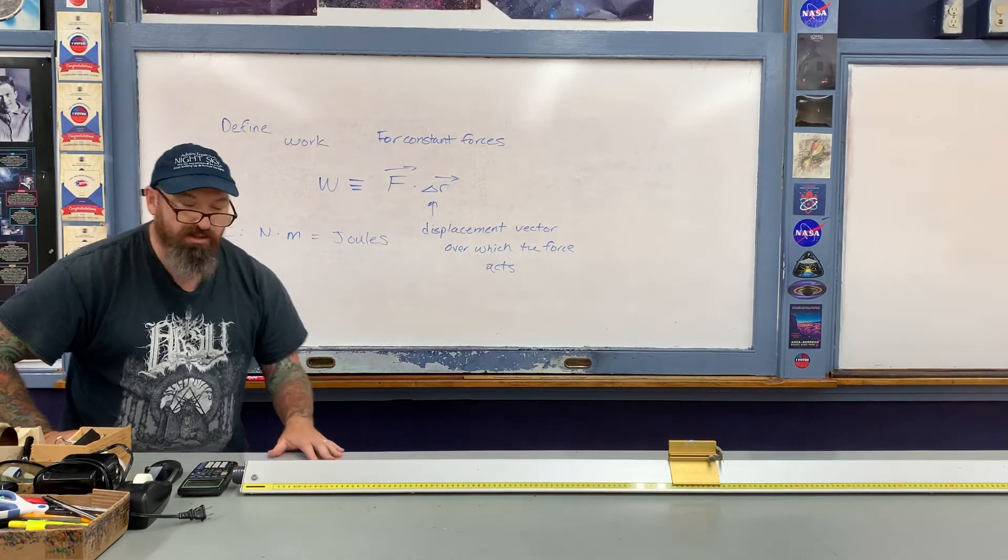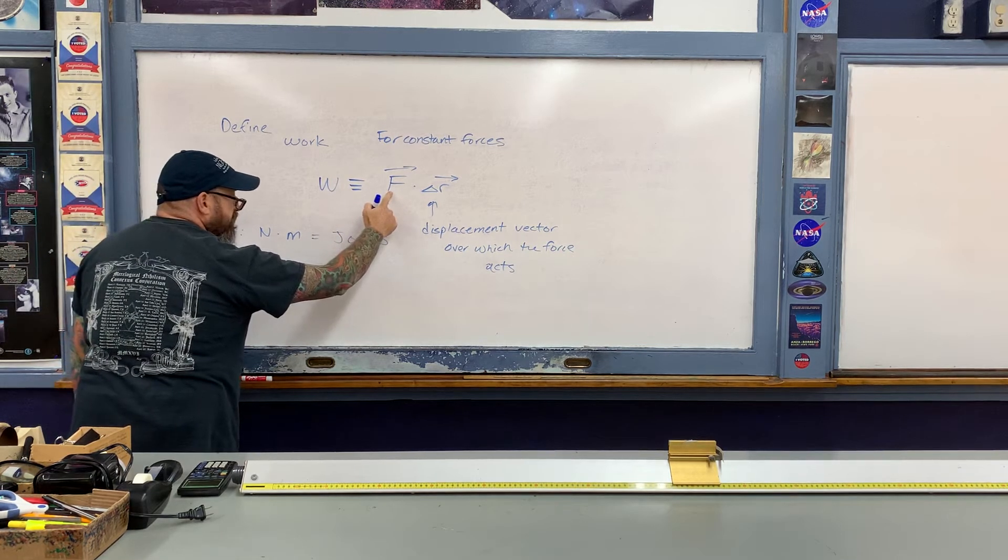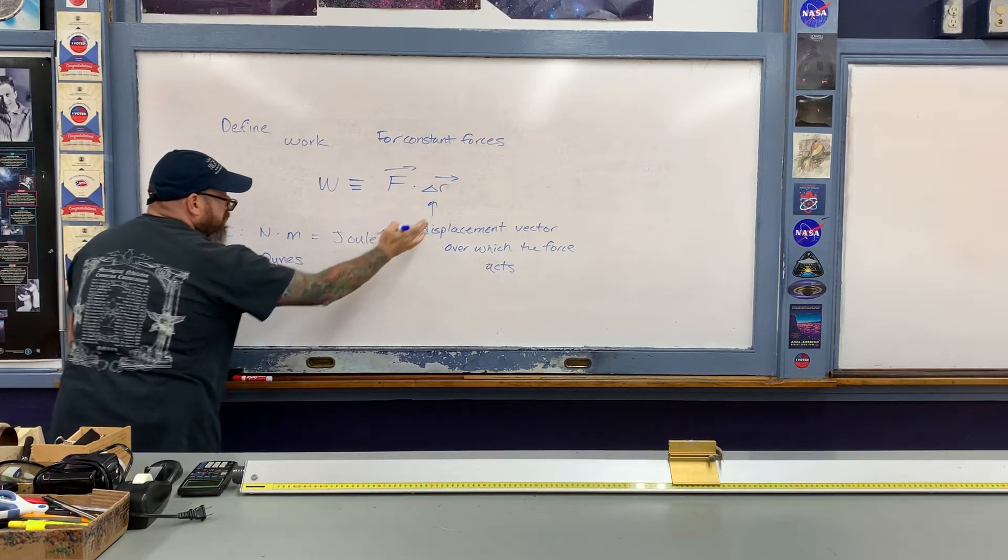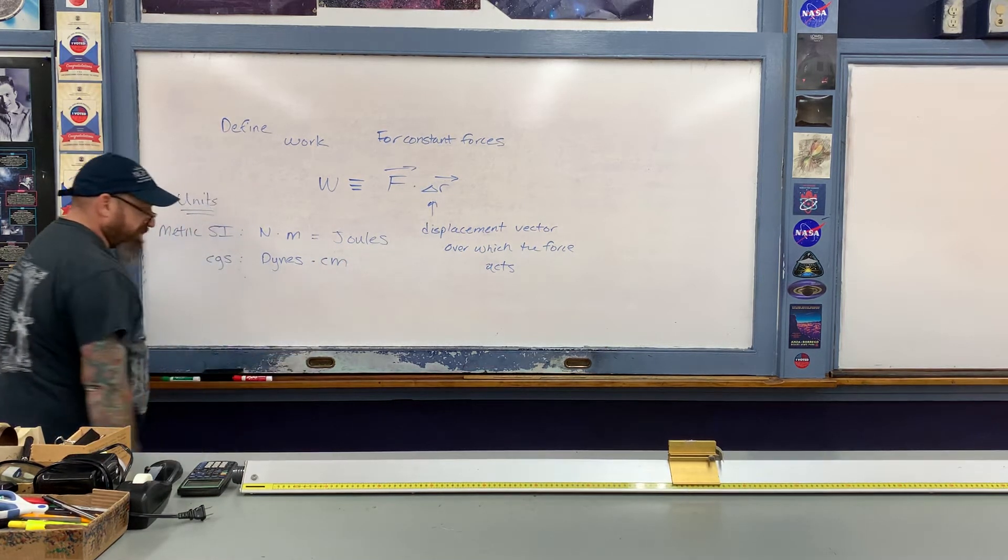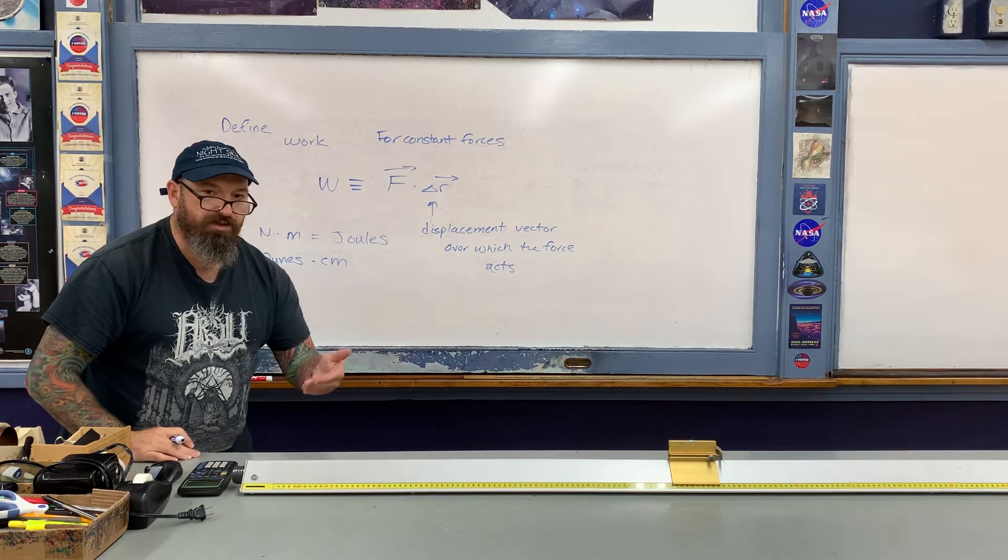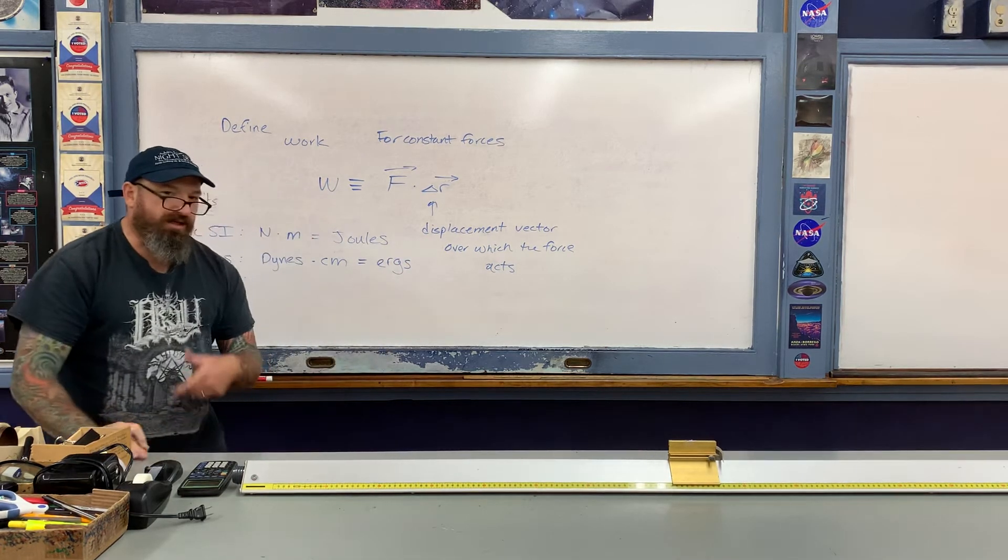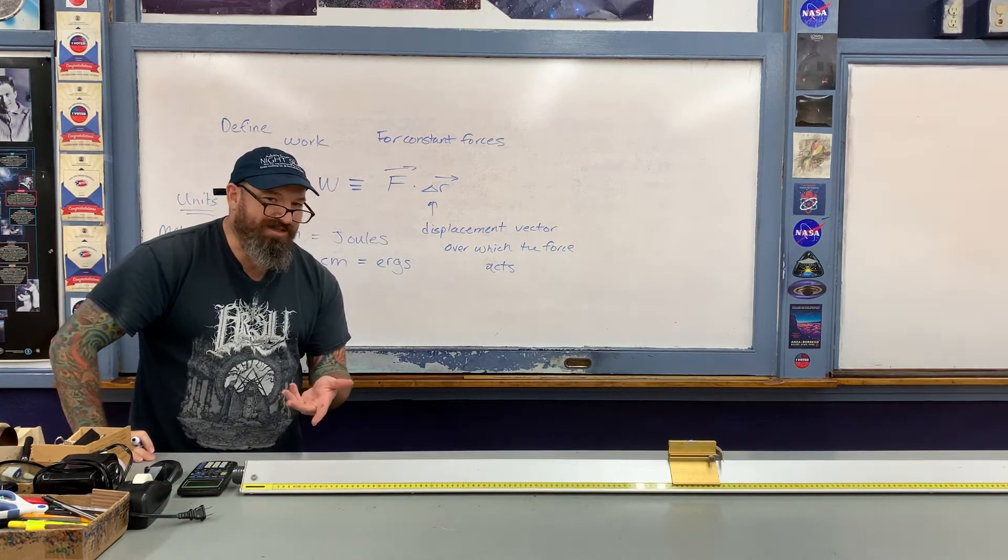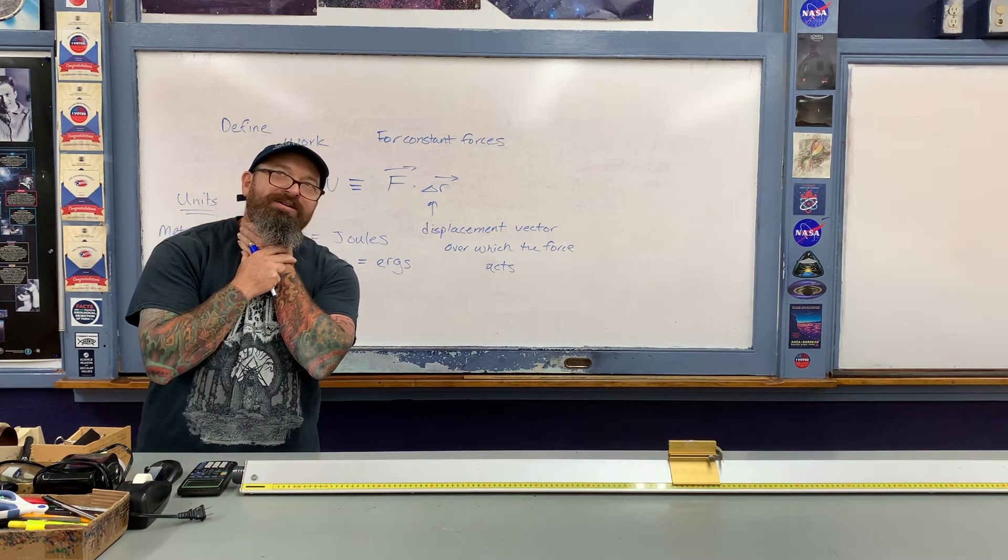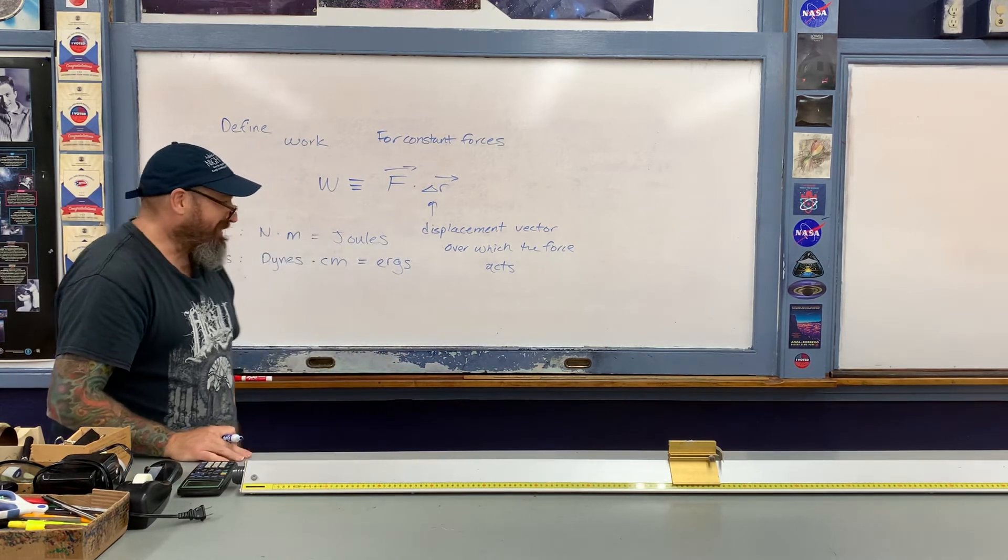In the CGS system, forces are in terms of dynes, and then we're multiplying that by displacement in terms of centimeters. A dyne-centimeter is also given its own name. It's referred to as an erg. There's actually a really easy way to remember it. It's kind of a silly physics joke: the dyne centimeter. That's the easiest way to remember what an erg is.